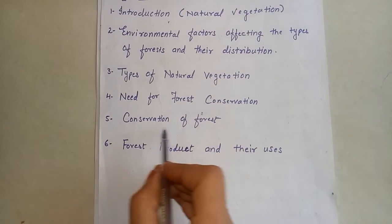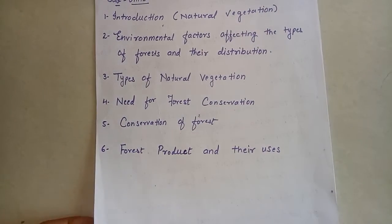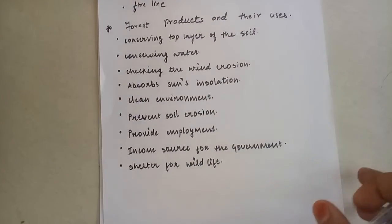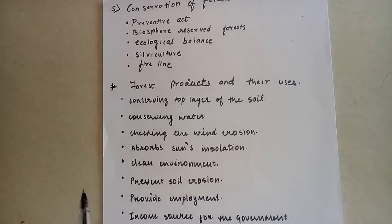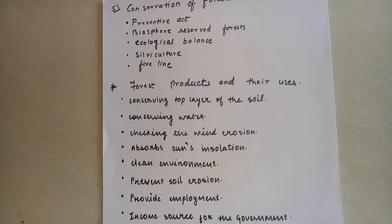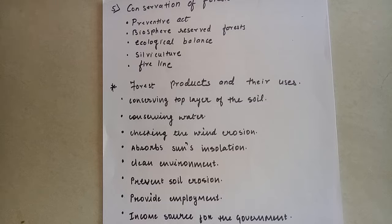Now come to the 5th point: conservation of forest. The sub-topics are preventive act, biosphere reserve forest, ecological balance, silviculture, and fire line. The latest reports of the National Remote Sensing Agency, i.e. NRSA, indicate that the country is losing about 1.3 million hectares of forest cover every year. This will be detrimental to our national interest, hence the urgent need is for conservation of forests. This is an alarming stage.